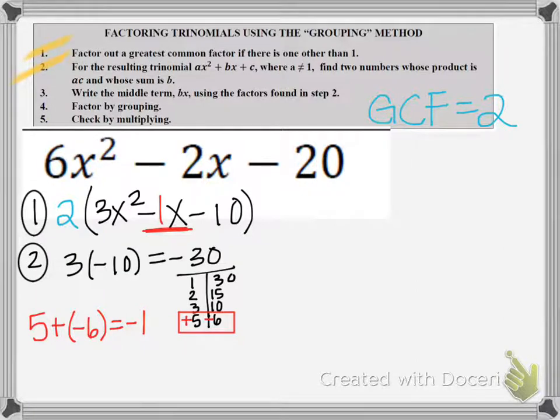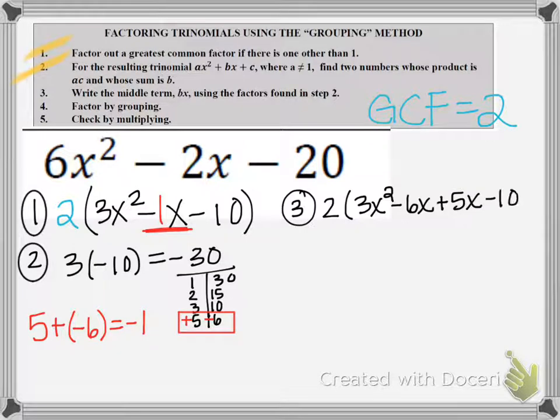Now in step 3, I'm going to turn that trinomial into a polynomial with 4 terms. So I still have the 2 on the outside, I still have 3x squared, but the minus 1x, I'm going to rewrite it as negative 6x plus 5x minus 10. Now, you'll notice I did switch the order of my two numbers. You'll notice in my chart, the positive 5 came first and the negative 6 came second.